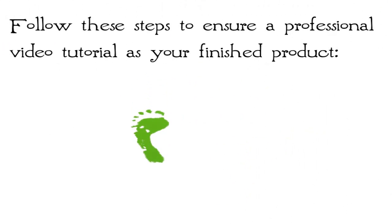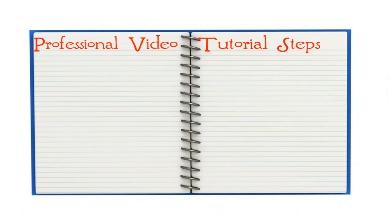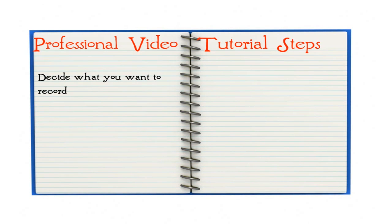Follow these steps to ensure a professional video tutorial as your finished product. Step 1: Decide what you want to record. You likely are well-versed in many different topics, such as how to build a birdcage, for example. You can use a webcam to record parts of the steps, use video editing software to edit the steps, then put it all in a PowerPoint slideshow. Next, you use the screen recording software to record the PowerPoint.